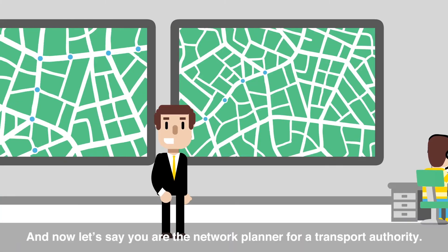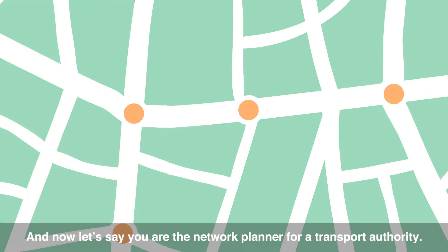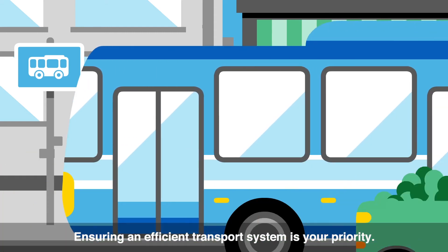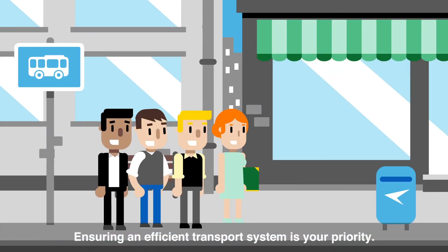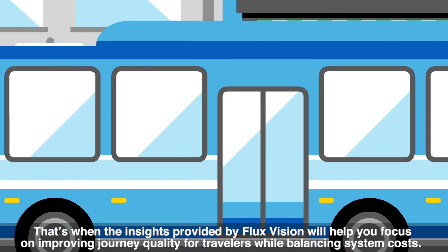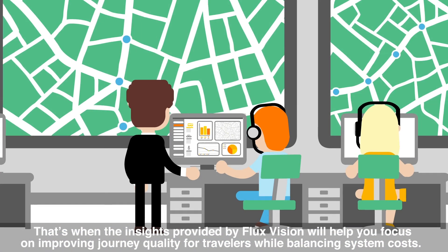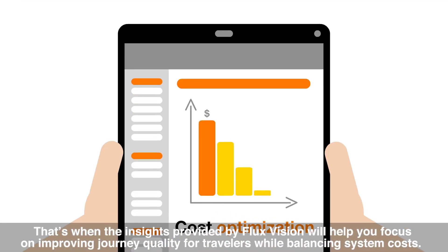And now let's say you are the network planner for a transport authority. Ensuring an efficient transport system is your priority. That's when the insights provided by FluxVision will help you focus on improving journey quality for travellers, while balancing system costs.